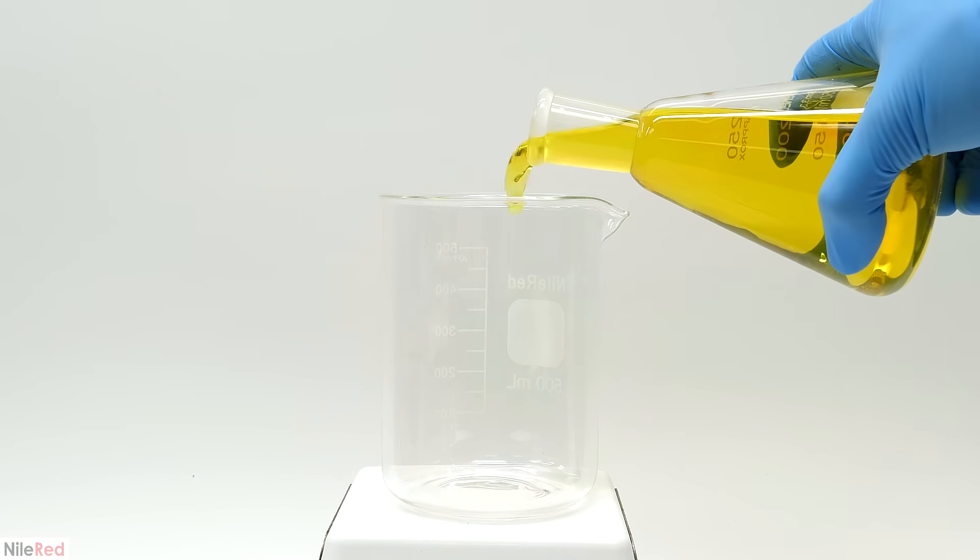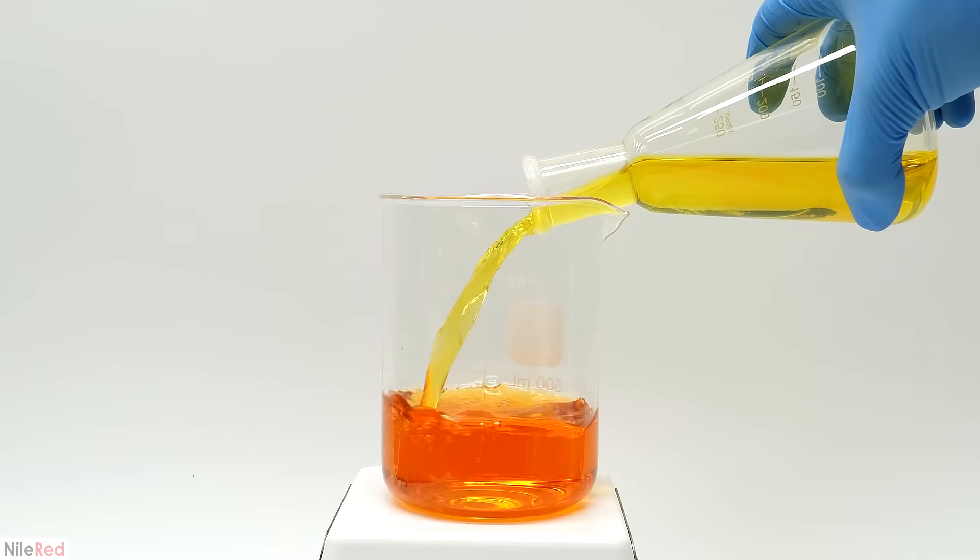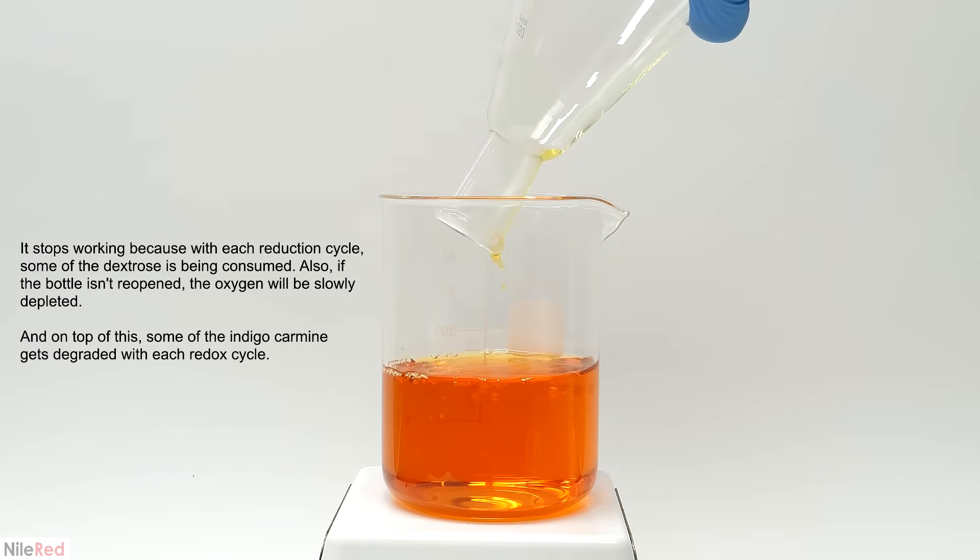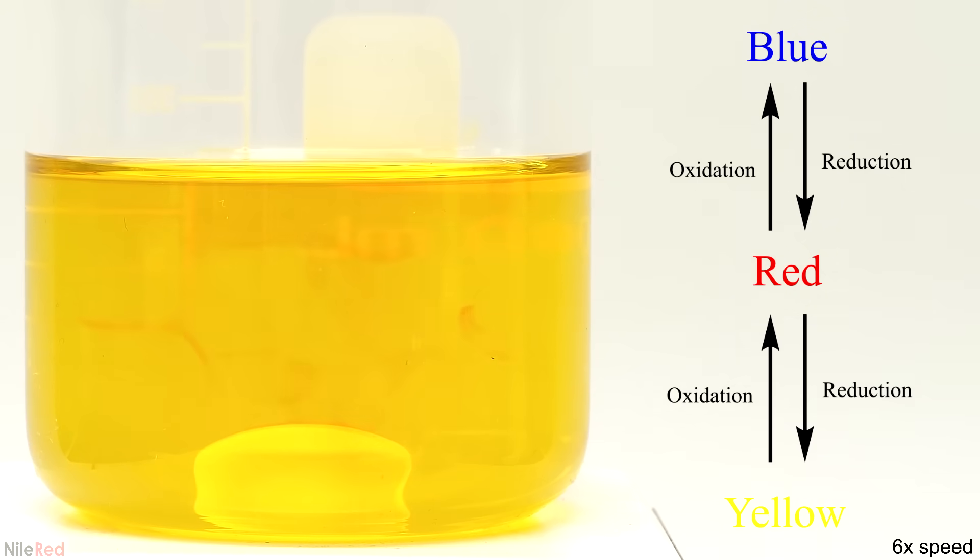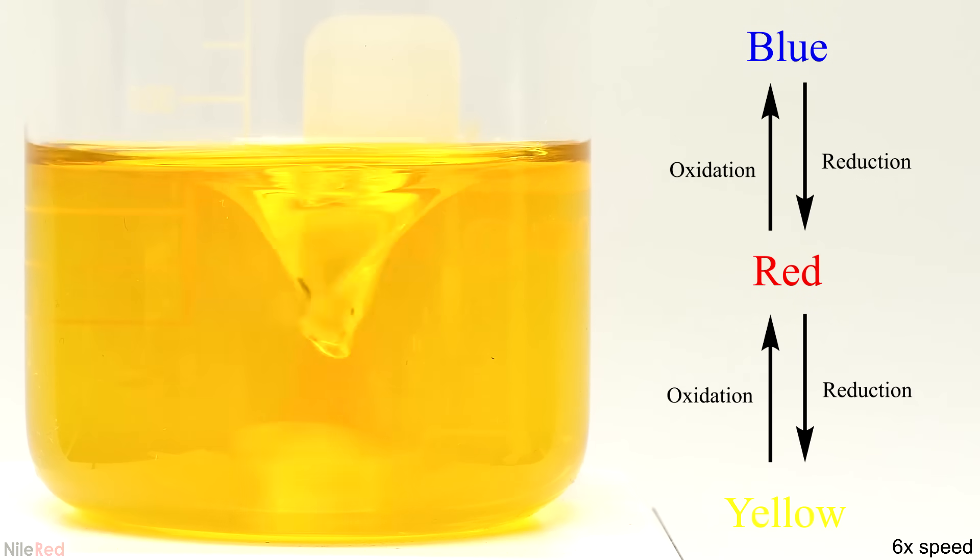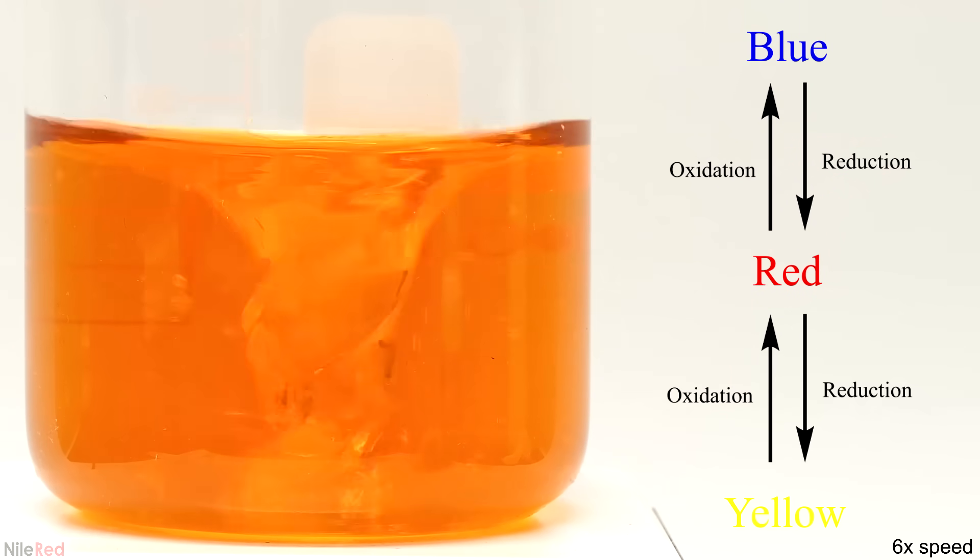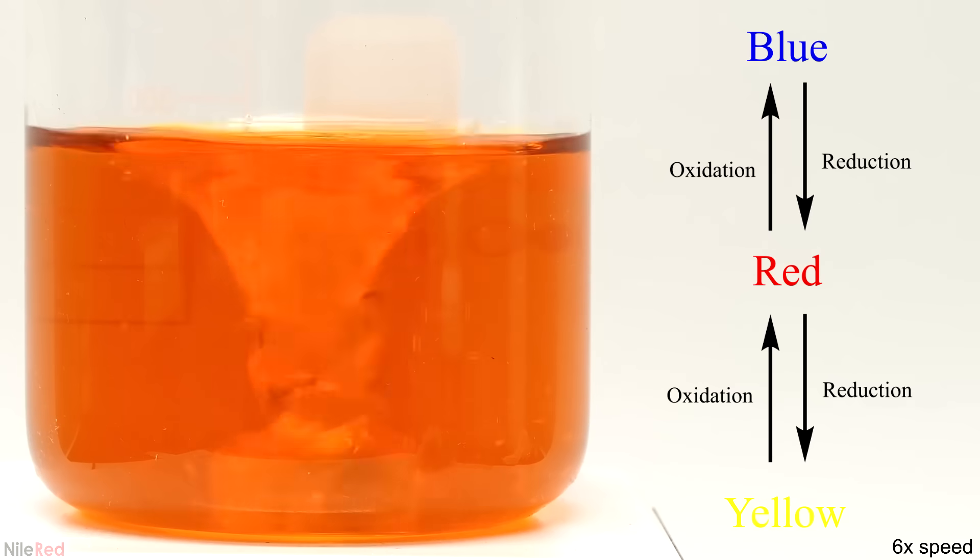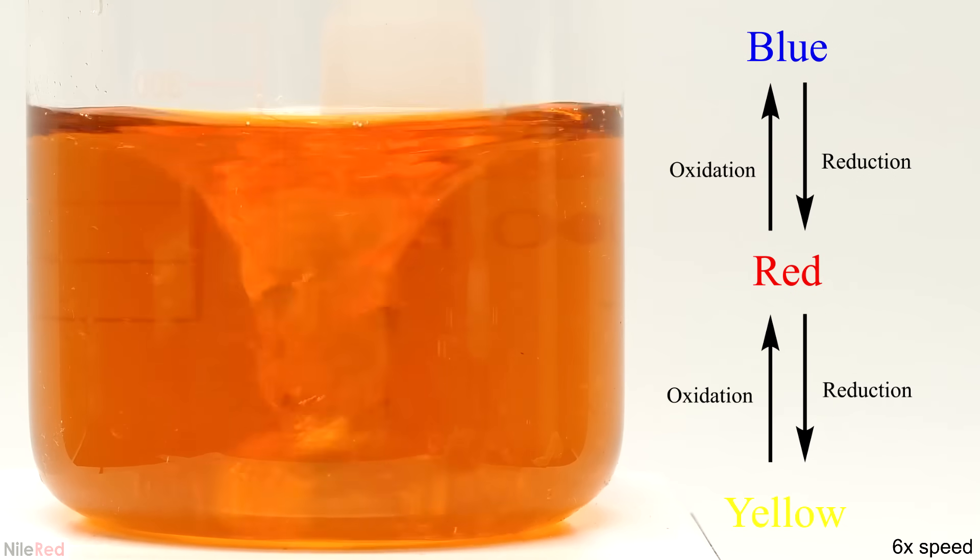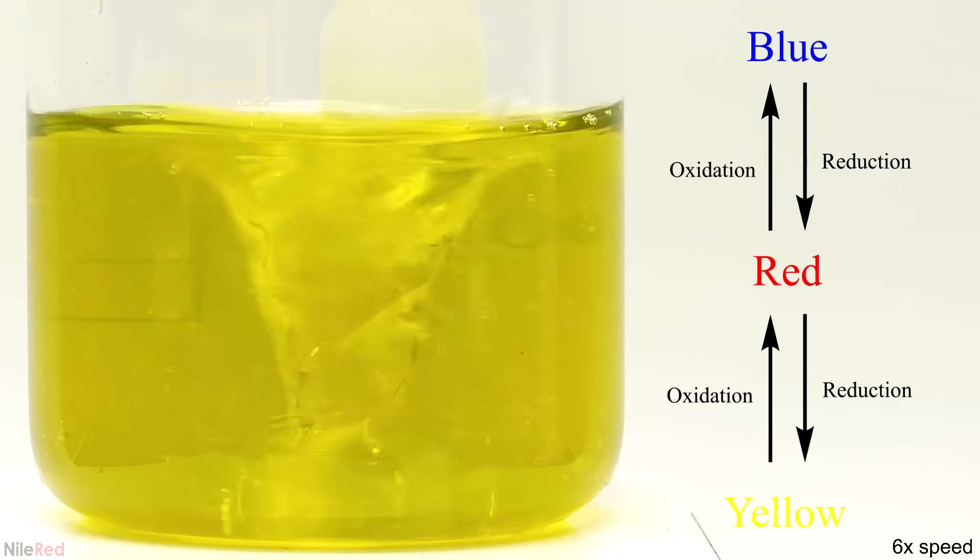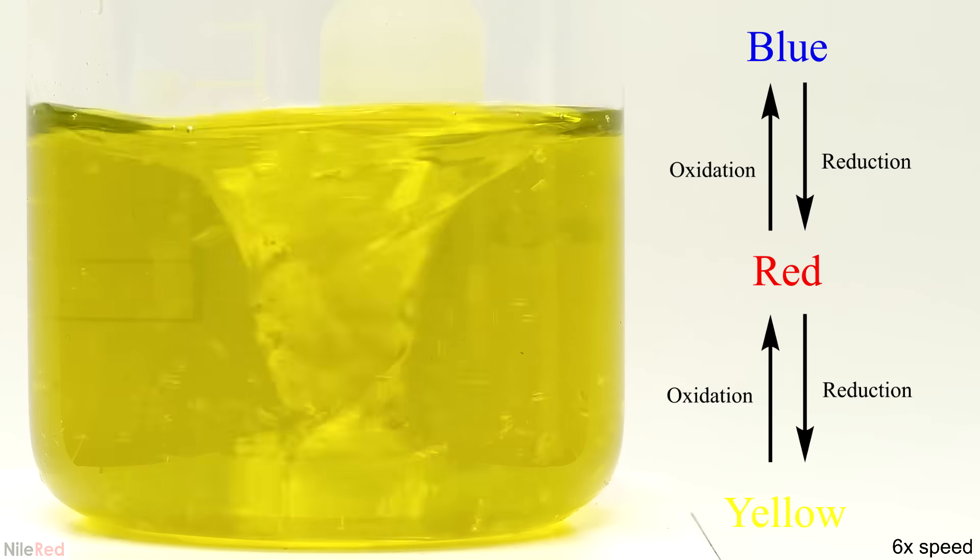And once it's fully reduced again, it can be shaken and the cycle can be repeated. I never tried counting it but I think you can do it at least four or five times with pretty decent results. So with all that being said the basic idea behind this process is that it's a battle between oxidation and reduction. On the reduction side we have the sodium hydroxide and the glucose which are always trying to give electrons to the indigo carmine. Then on the oxidation side we have oxygen which is always trying to take them away. And the final effect that we get from this is an oscillation of the indigo carmine between its fully oxidized form and its fully reduced one.